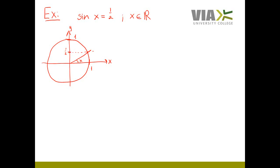But so will also the angle pi minus x, shown here on the unit circle. So we have two potential solutions: both the angle x and the angle pi minus x.